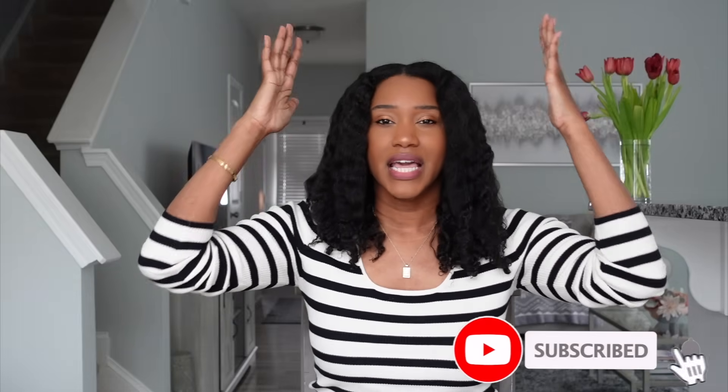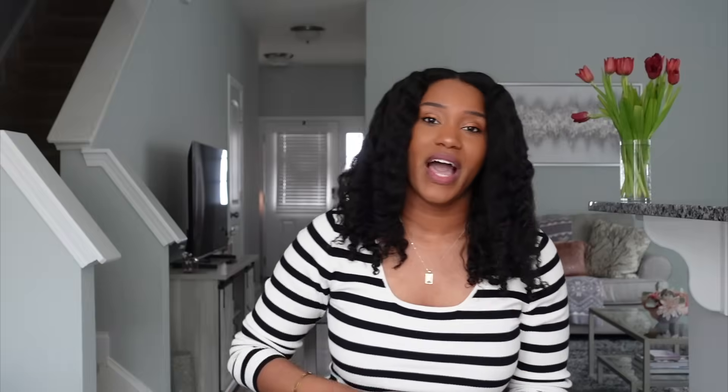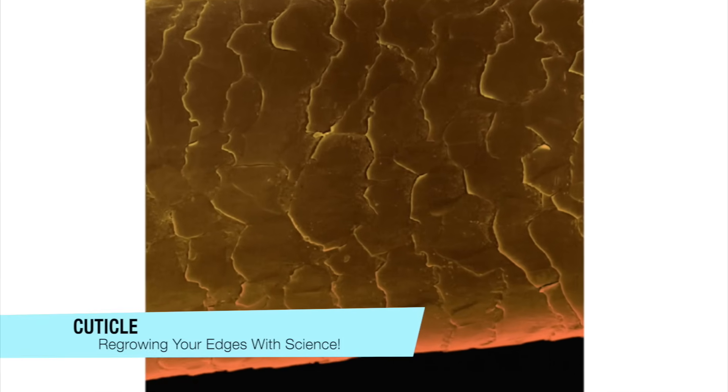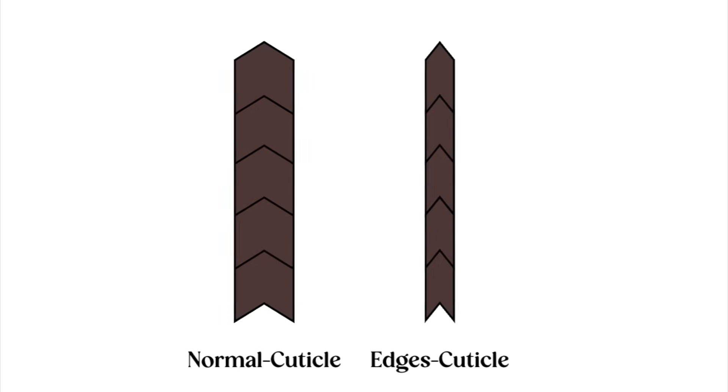Let's go ahead and get started. When it comes to the biology and chemistry of our edges, it really starts with the basic anatomy of the hair strand. You have the cuticle, the cortex, and the medulla. The cuticle is like shingles on a roof — basically layers of keratin. The thicker the cuticle layer, the more protection and strength it has. The cuticle layers along our edges are thinner compared to other parts of our hair.